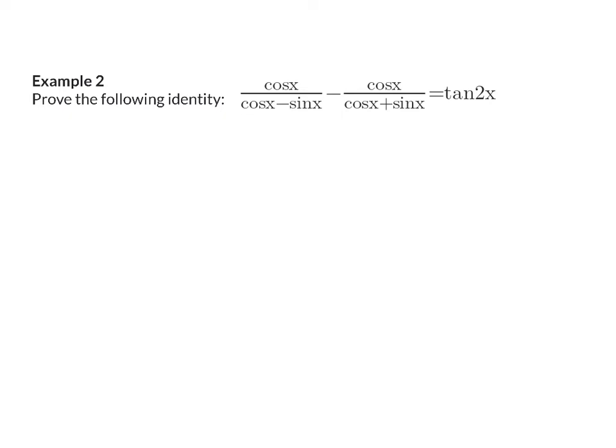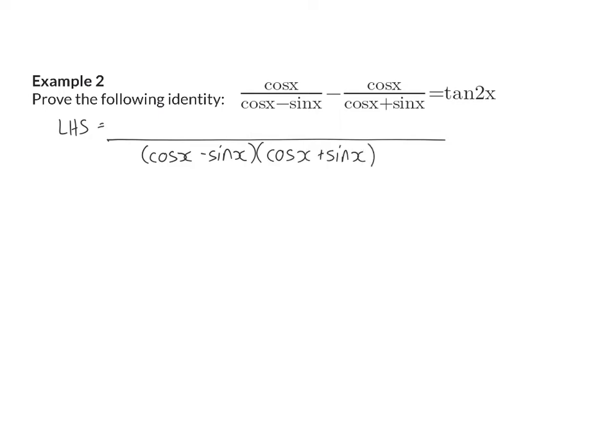In example 2, I have two terms on the left-hand side that can be added up, and on the right I have tan as well as a double angle that can be changed. I'm still going to start on the left-hand side, where I can add those two fractions. When adding fractions, I need a common denominator. Looking at the two denominators, I will need cos x minus sin x from the first fraction and cos x plus sin x from the second fraction in my new denominator.